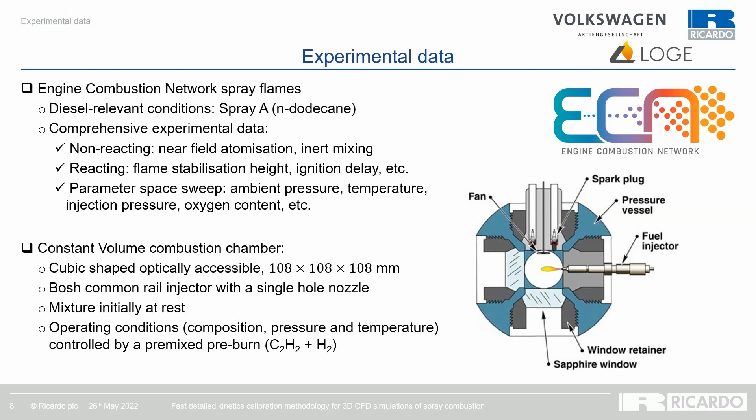The experimental dataset used in this presentation comes from the Engine Combustion Network, or ECN, set of spray flames — specifically the Spray A, a diesel flame fueled with n-dodecane. It features a very comprehensive experimental dataset with measurements of non-reacting variables such as near-field atomization and inert mixing, but also reacting condition data including flame stabilization height and ignition delay measurements, amongst others. There is also a large parameter sweep in terms of ambient pressure, temperature, oxygen content, and injection pressure.